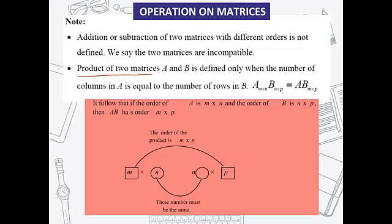When can we multiply two matrices? This is very important. We can only multiply two matrices when the number of columns in A is equal to the number of rows in B. Notice that the column of matrix A is the same as the row of matrix B. Your answer — the multiplication of two matrices — will have the rows of matrix A times the columns of matrix B.